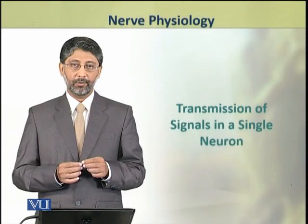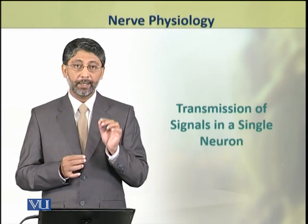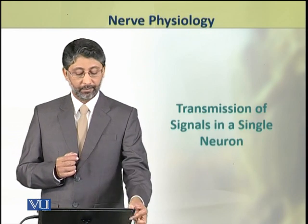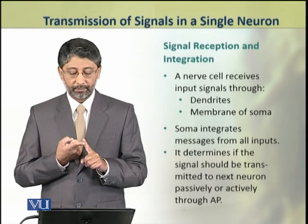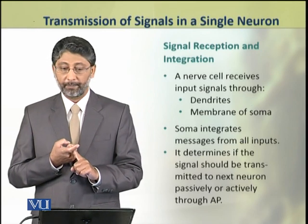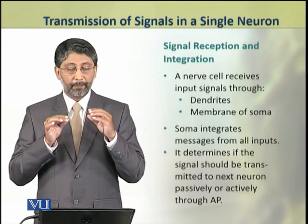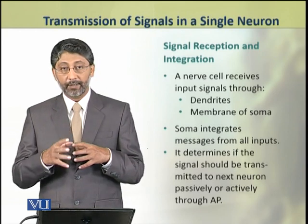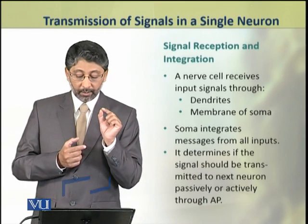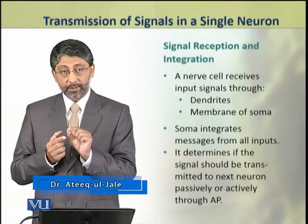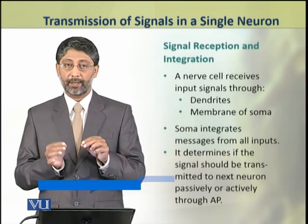Dear students, in this module we shall discuss the methods of transmission of signal in a single neuron. A nerve cell receives inputs through dendrites or membranes of its soma. The soma or cell body integrates the messages from all inputs and determines if the response is to be propagated through active processes, that is through the production of action potential, or through passive processes, that is through graded electrotonically conducted messages.